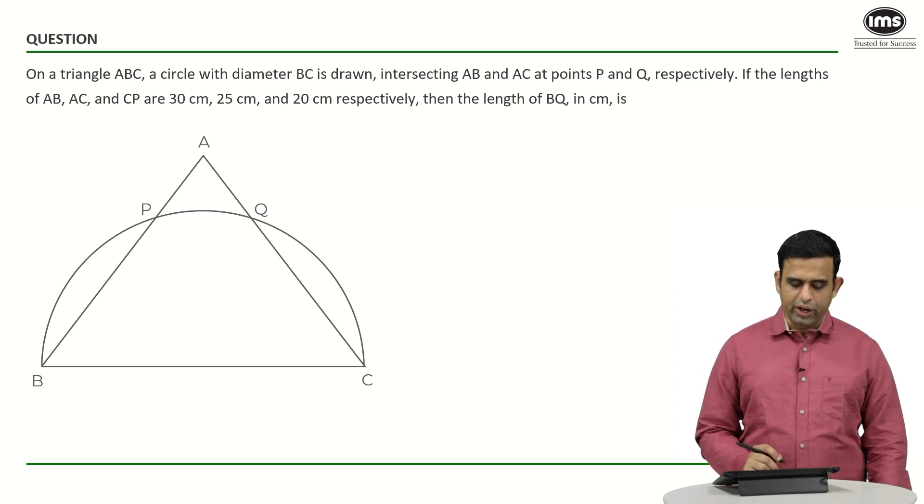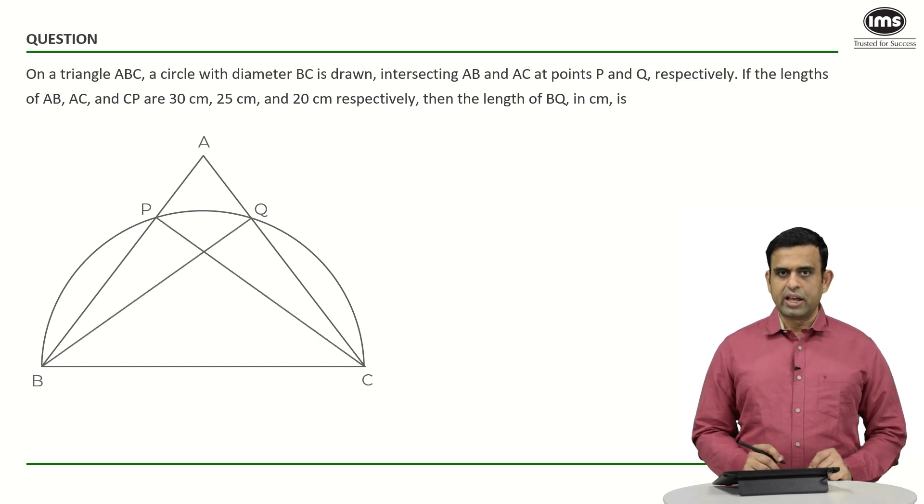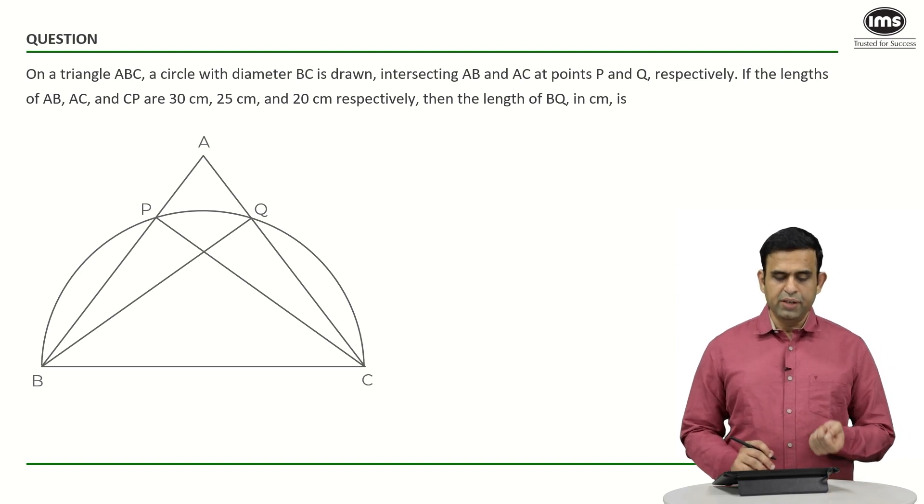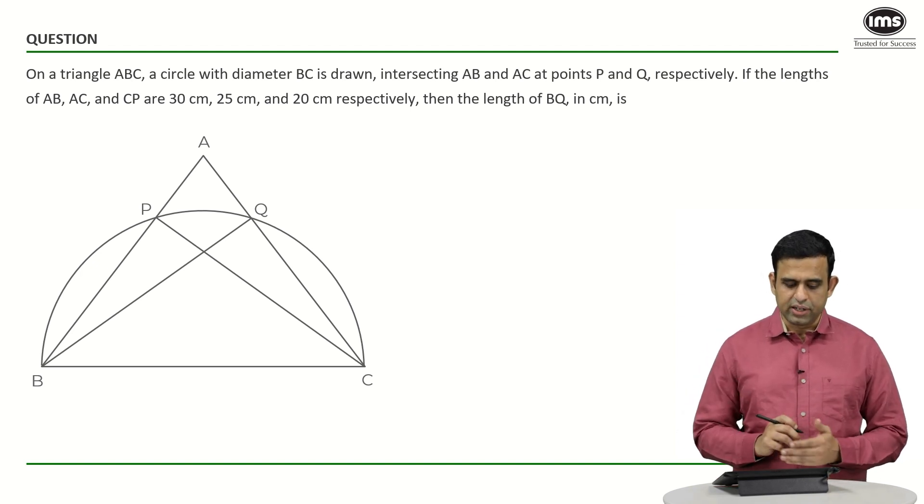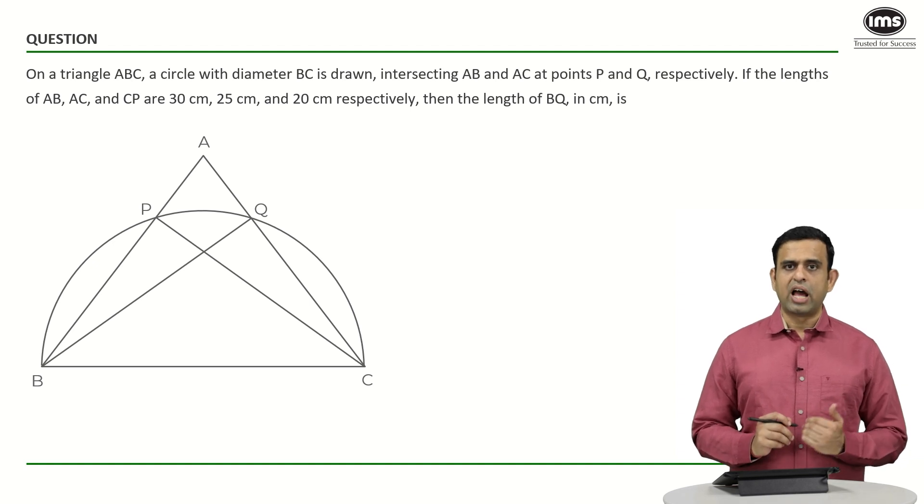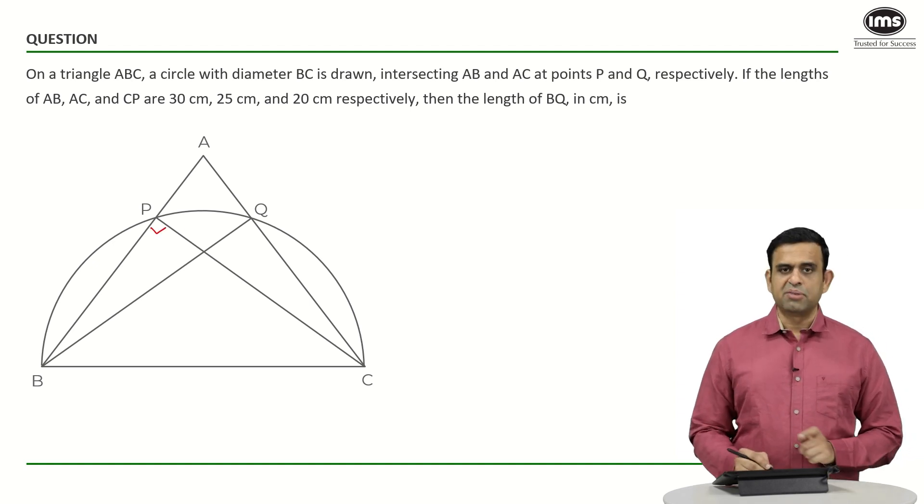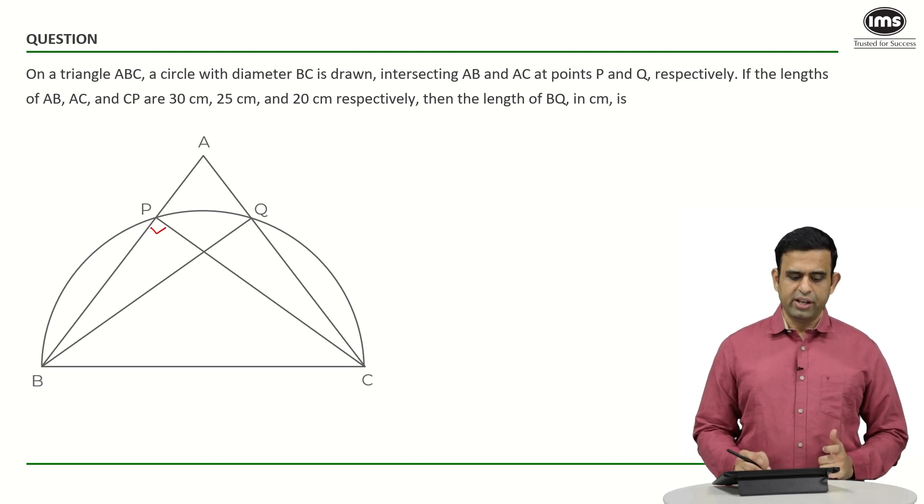The most important part is, if I join CP and BQ, can I say one thing? Since BC is my diameter and BPQC happens to be a semicircle, angle in a semicircle happens to be a right angle. What does it mean? This line segment CP has to be perpendicular to the line segment AB.